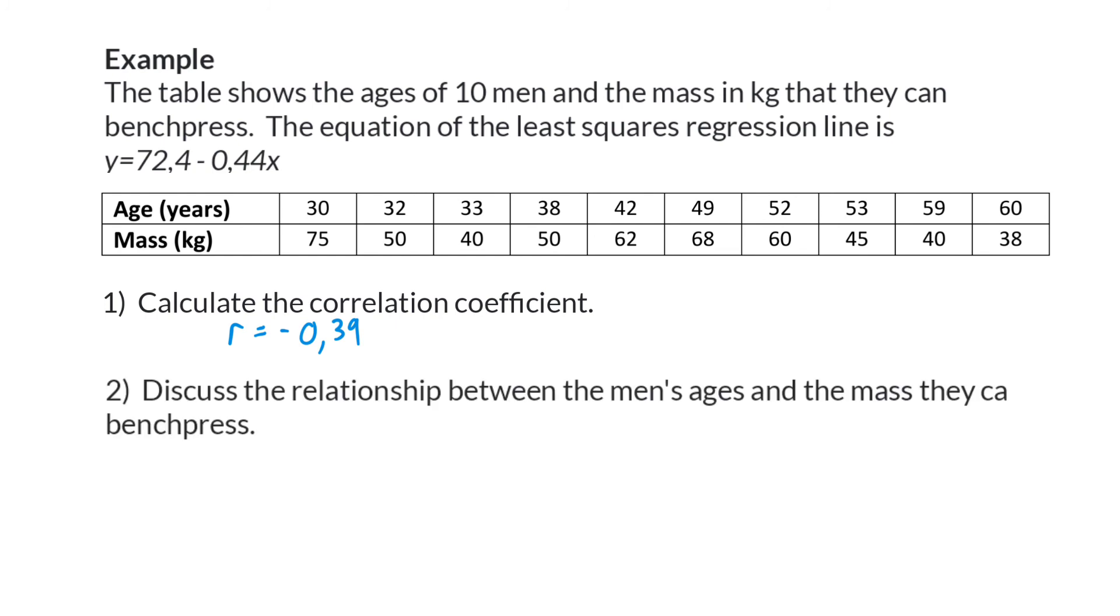Question 2: Discuss the relationship between the men's ages and the mass they can bench press. Here we have a weak negative linear correlation and that means that the predictions that we can make will not be very reliable.